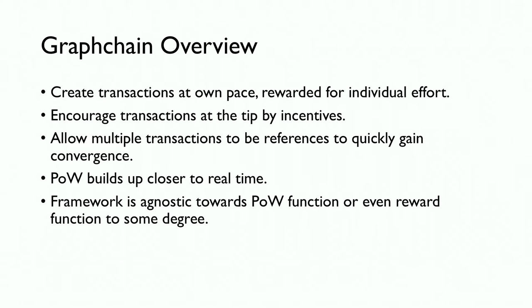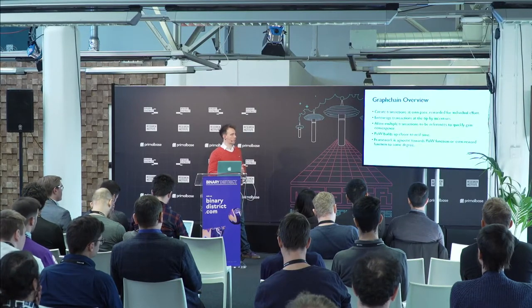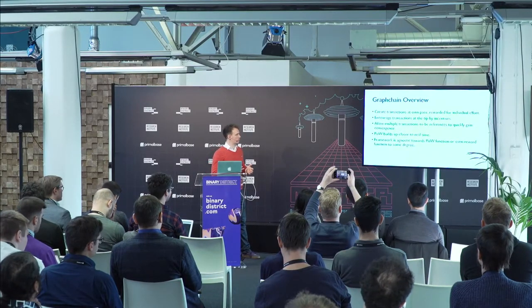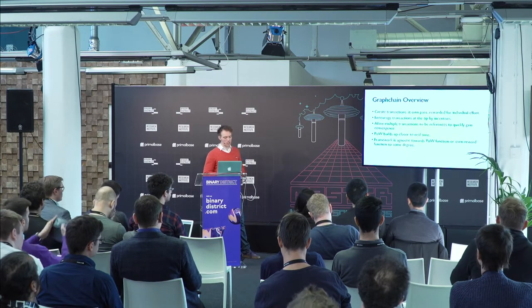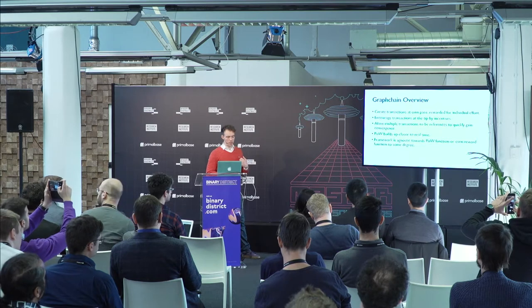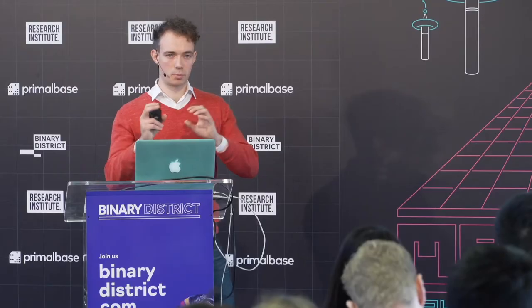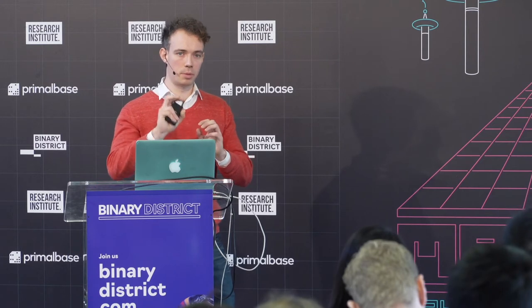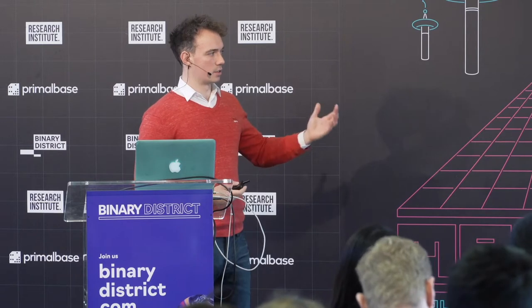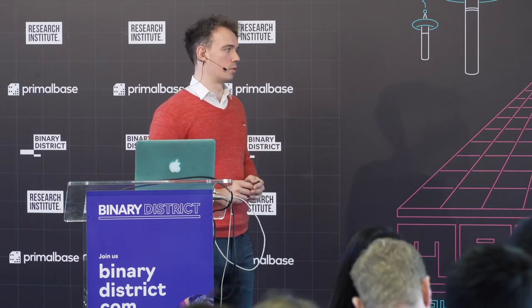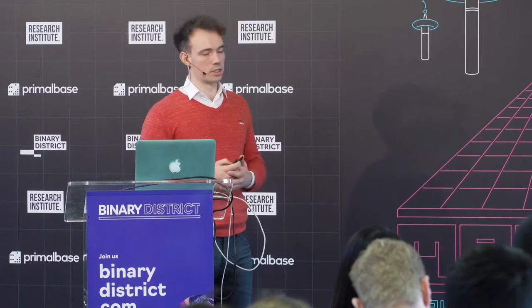Just to give an overview: you create transactions at your own pace, you reward for individual effort, you encourage transactions at the tip by incentives, and you allow for multiple transaction references to quickly gain convergence. Proof of work builds up closer to real time — the hope is that you have much smaller transactions created by people, with proof of work established by the individuals transacting. The framework is agnostic towards proof of work functions and even reward functions to some degree.